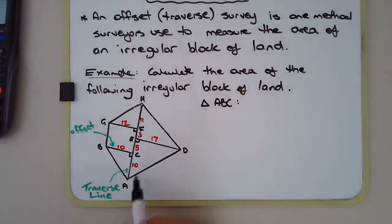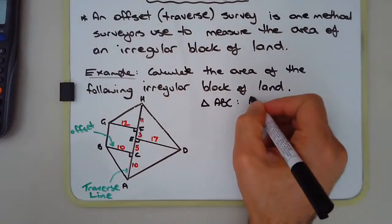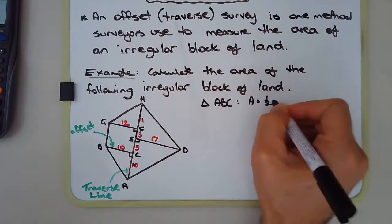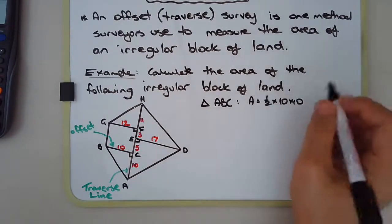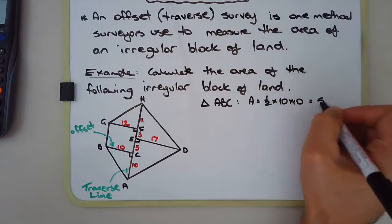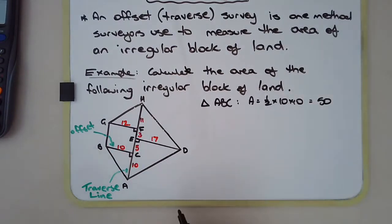So area, so ABC, we've got the base of 10 and we've got a height of 10. So area is equal to half base times height, so half 10 times 10, which is equal to 50. 50 square meters.